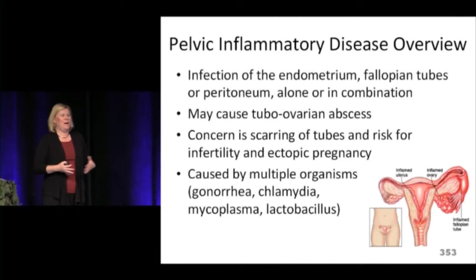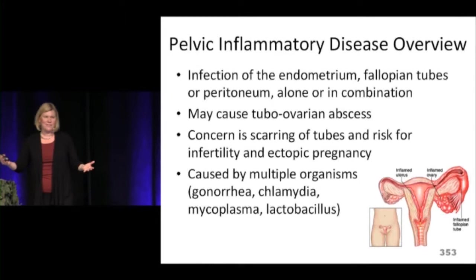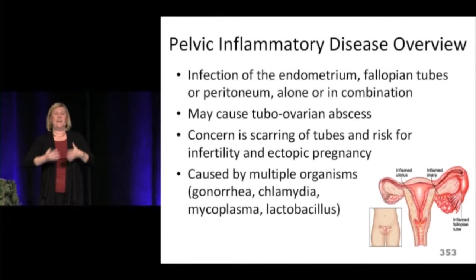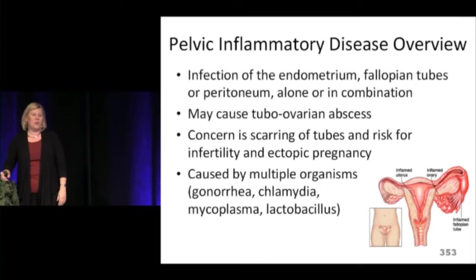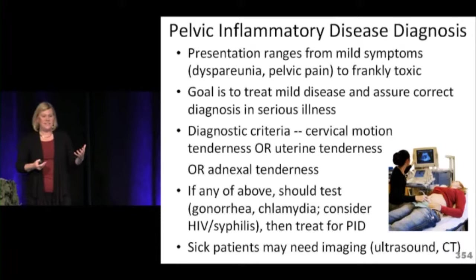PID — pelvic inflammatory disease — is a general term for infection of the uterus and tubes. It's a clinical syndrome, not pointing to one organism. Infection of the endometrium or fallopian tubes, or a tubo-ovarian abscess, all fall under PID. If untreated, it's a common cause of infertility and fallopian tube scarring. It can be caused by multiple organisms and presentation is highly variable — from mild symptoms to a very sick patient.